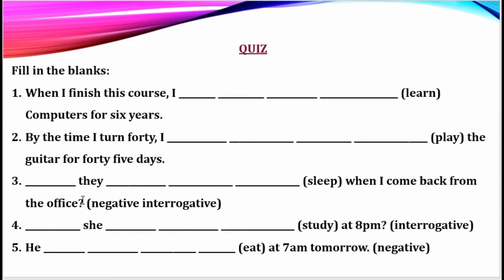The third one has a question mark, so it is a negative interrogative sentence. Its structure is: won't + subject + have + been + present participle (V1 + -ing). The main verb is 'sleep' — 'When I come back from the office.' The fourth is also interrogative — not negative — so it starts with 'will': will + subject + have + been + V1 + -ing. The main verb is 'study' — at 8pm. The last one is a negative sentence with 'not.' The main verb is 'eat' — at 7am tomorrow.